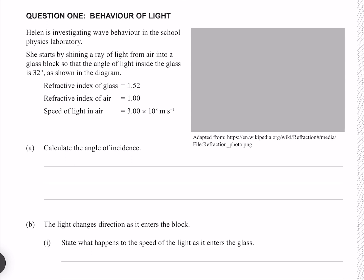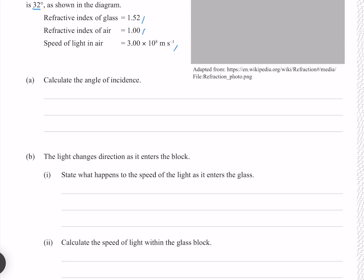Helen is investigating wave behavior in the school physics laboratory. She starts by shining a ray of light from air into a glass block so that the angle of light inside the glass is 32 degrees, as shown in the diagram. The refractive index of glass is 1.52, the refractive index of air is 1, and the speed of light in air is 3 times 10 to the 8 meters per second. Calculate the angle of incidence.